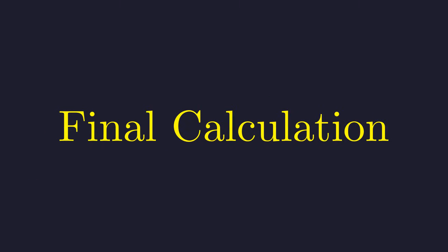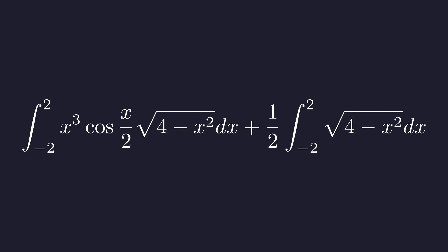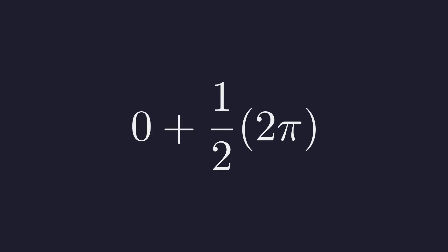Time to put the pieces together. Remember we split the original integral into two parts: the first one turned out to be zero, and the second one gave us two π. Plugging those in makes this pretty straightforward. One half times two π simplifies to just π. Zero plus π, and we land on π.